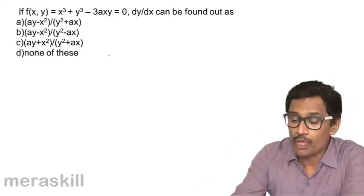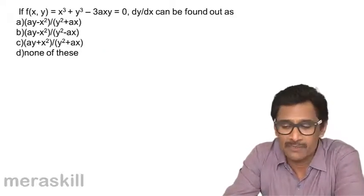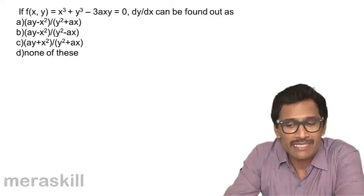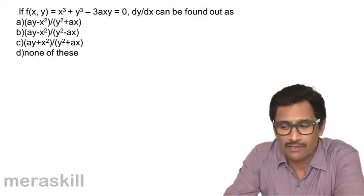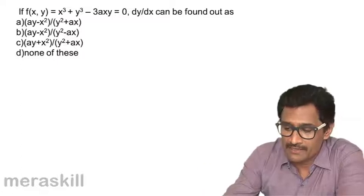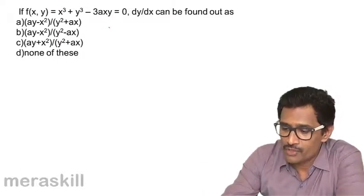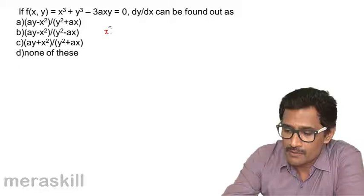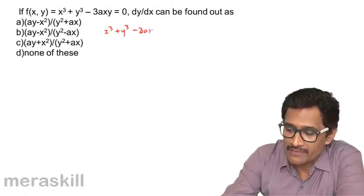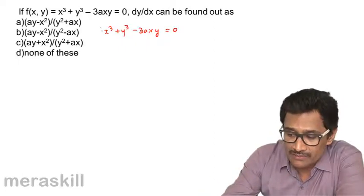Now we have an implicit function of x and y, written as f(x, y). The equation is x³ + y³ − 3axy = 0, and we need to find dy/dx. Differentiating with respect to x gives 3x² plus 3y² (dy/dx).